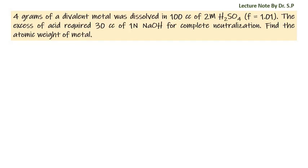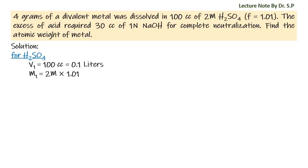Solution for sulfuric acid: given volume V1 is equal to 100 cc, that is equal to 0.1 liters. Given molarity of sulfuric acid is equal to 2 molars into concentration factor 1.01. We have to multiply the given concentration by the concentration factor to get actual concentration, so the actual concentration of sulfuric acid is 2.02 molars.